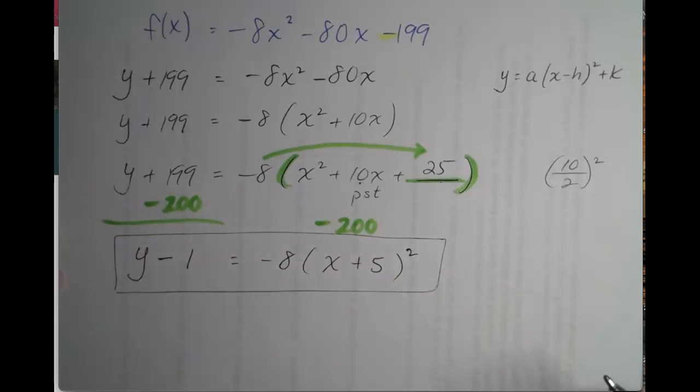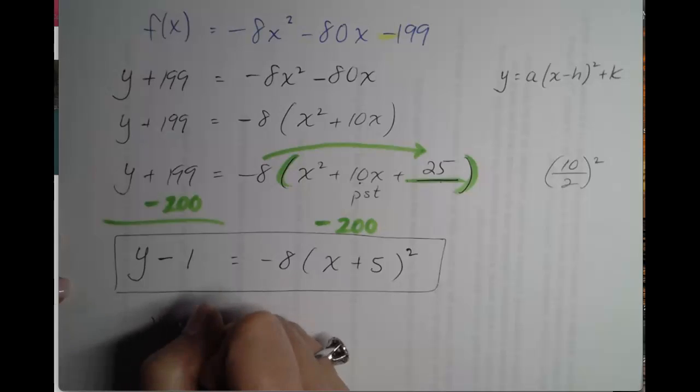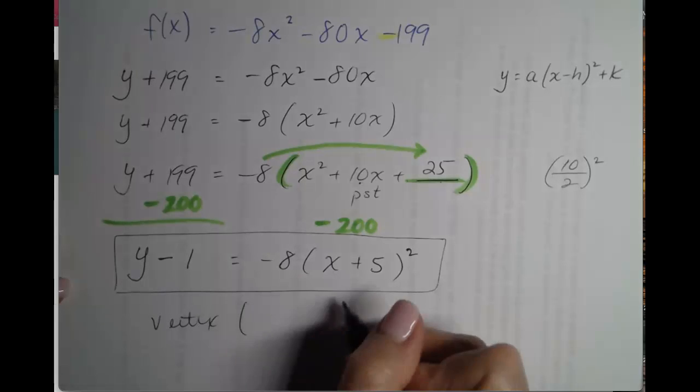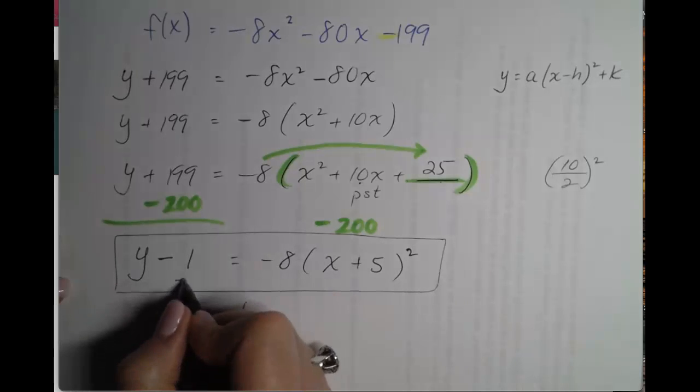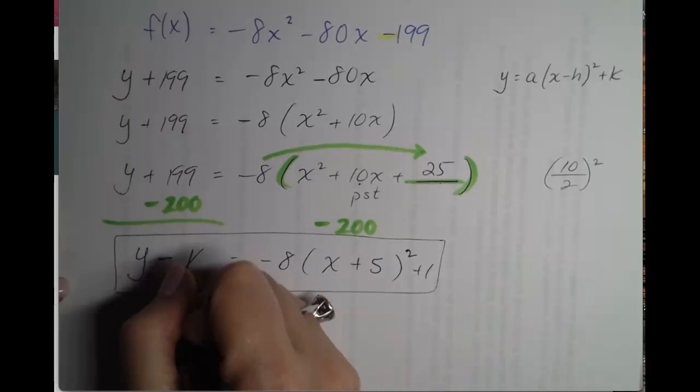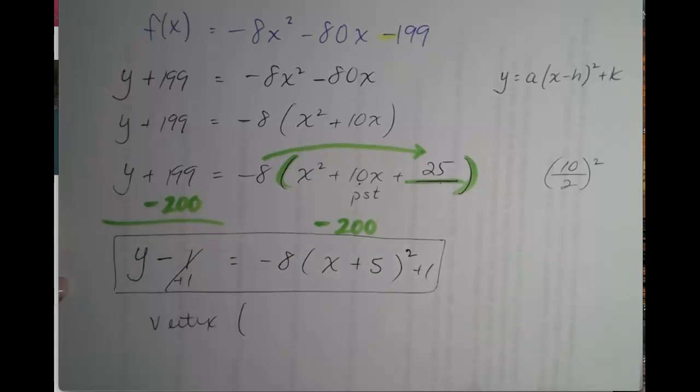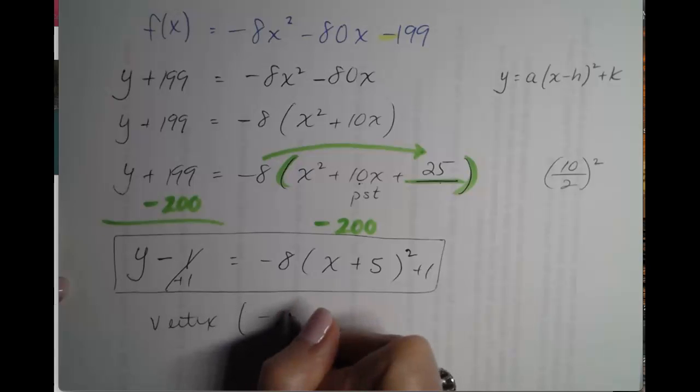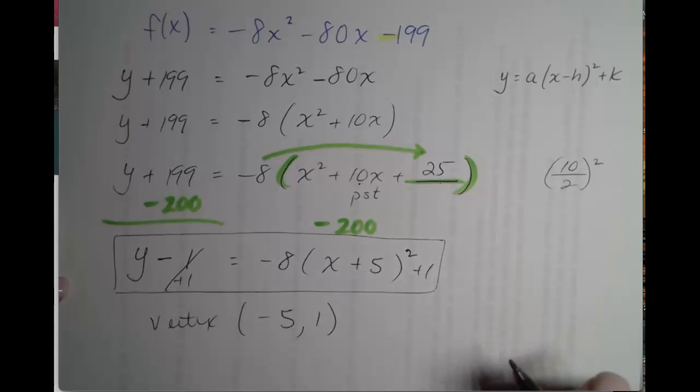This is our vertex form. Our vertex is at, let's put the 1 over. Now that's a better looking vertex form. This is our vertex form. Our vertex is at negative 5, positive 1.